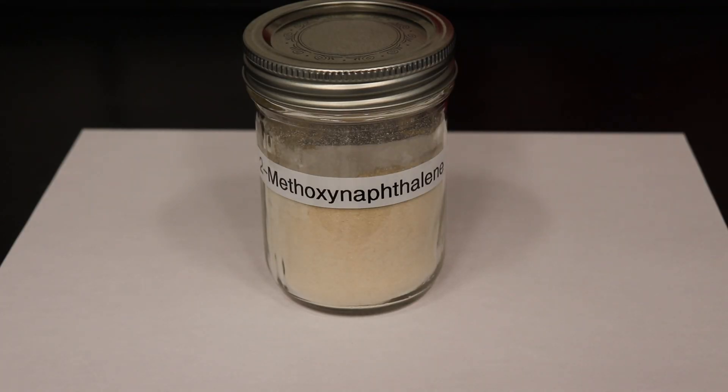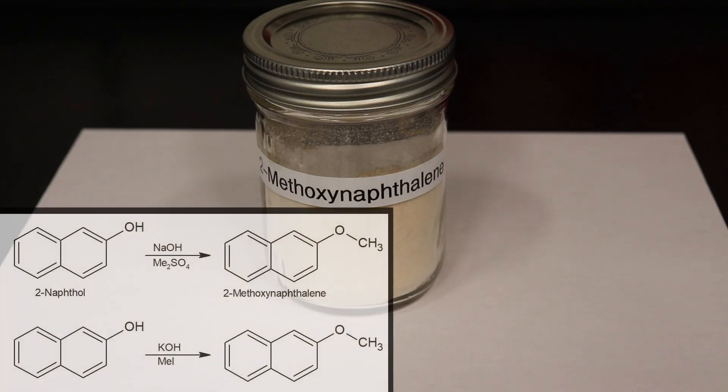Today, I will be demonstrating two methods for the methylation of 2-napthol to form 2-methoxynaphthalene, one using dimethyl sulfate and another with methyl iodide.